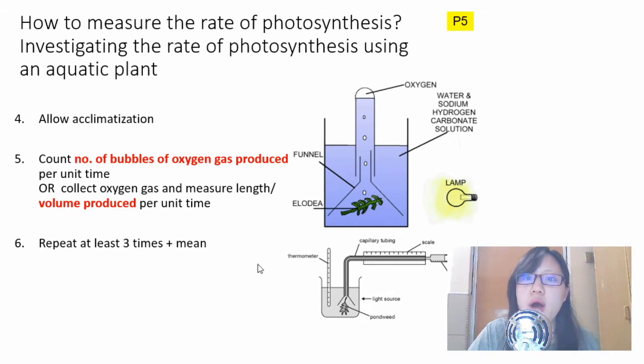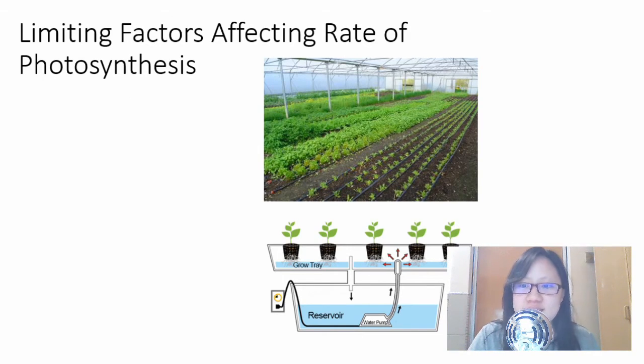That's how you measure the rate of photosynthesis using aquatic plant. We've learned there are a few limiting factors: temperature, carbon dioxide concentration, and light intensity.